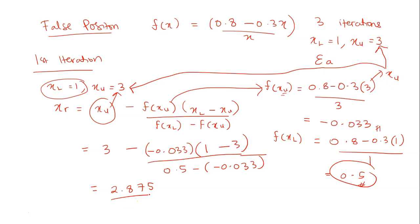Now that you got the value or the answer for x_r you need to check this f(x_l) times f(x_r). Is it more or less than 0? So this is f(x_l) is 0.5 times f(x_r). So how to calculate f(x_r)? You just substitute your x_r here 2.875 into this function equation. So let me just show here.